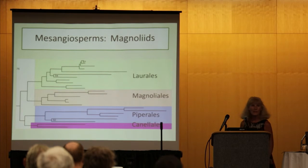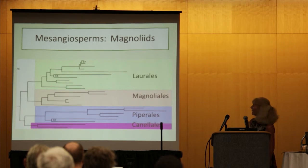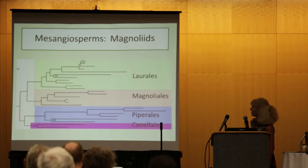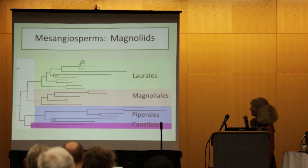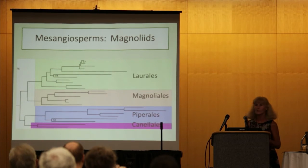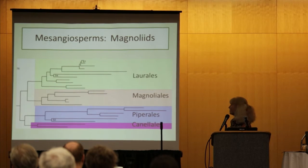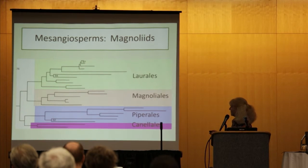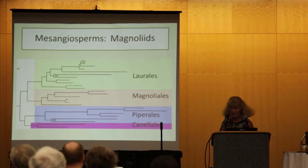Within the magnolians, we actually see some very nicely resolved relationships — typically those we've been achieving through plastid analysis for several years — with Laurales and Magnoliales sister to each other, and Piperales and Canellales together.